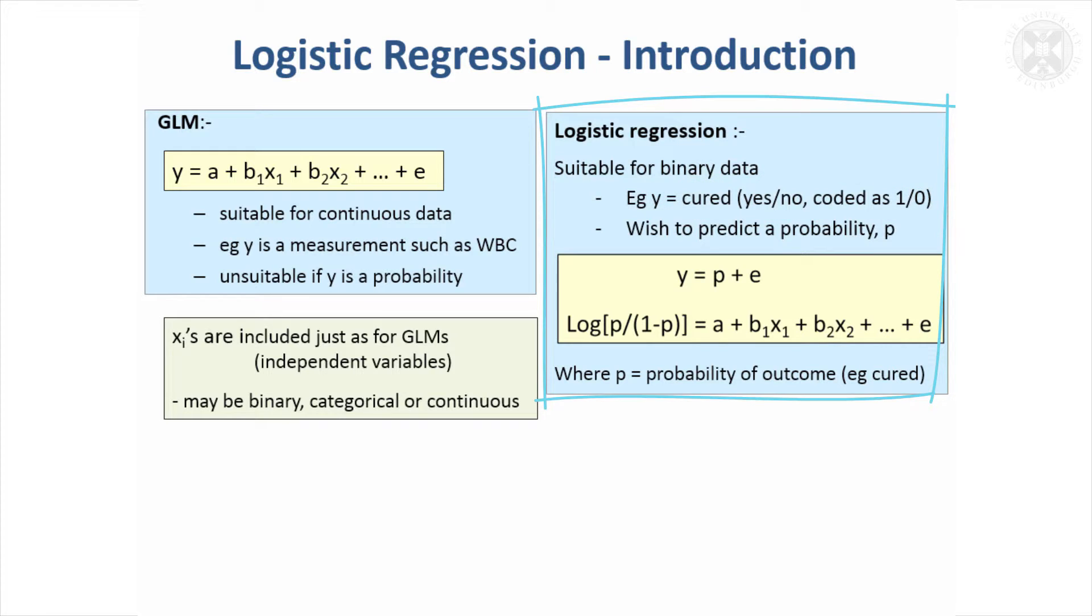They're going to be predicted by a probability in the model plus an error term. But in terms of modeling a probability, you've got to be quite careful. You can't model it on a linear scale because it's got a range of 0 to 1. You can't have negative probabilities, you can't have probabilities greater than 1.